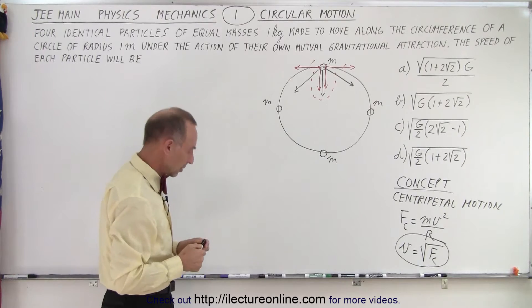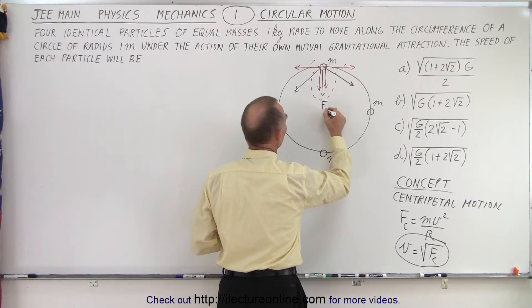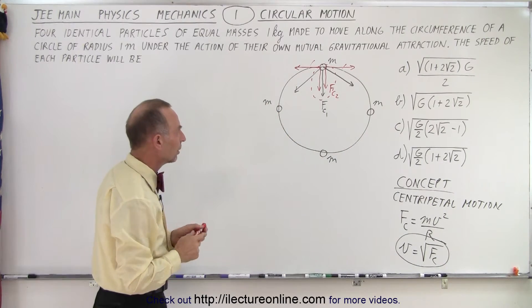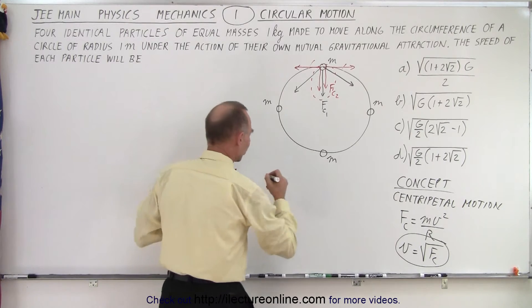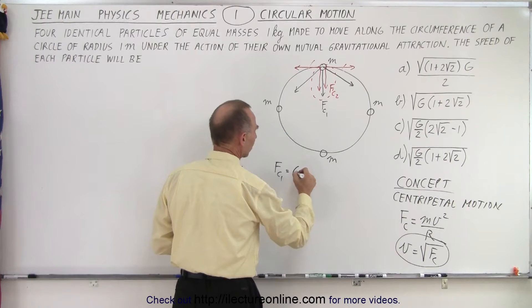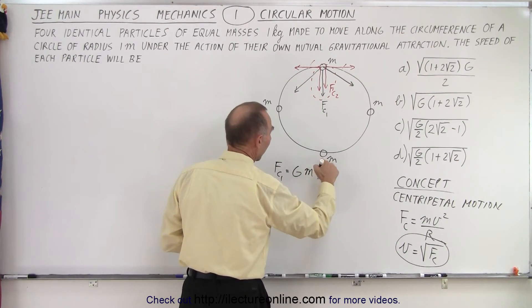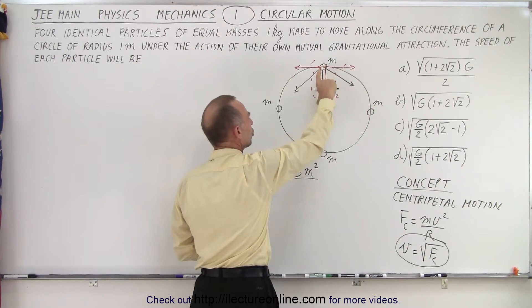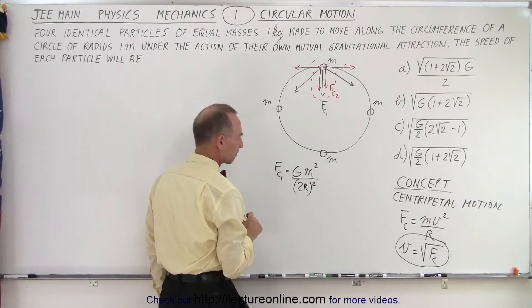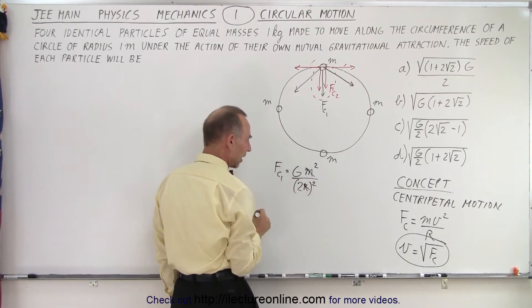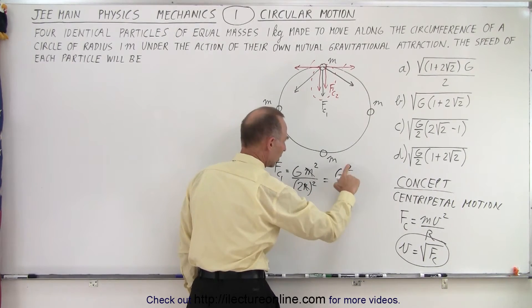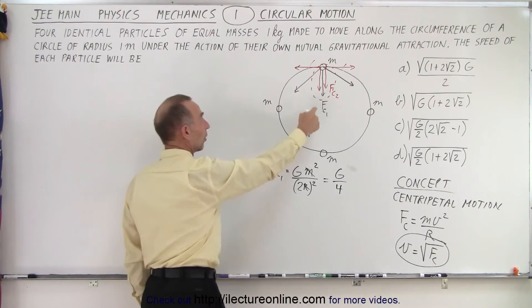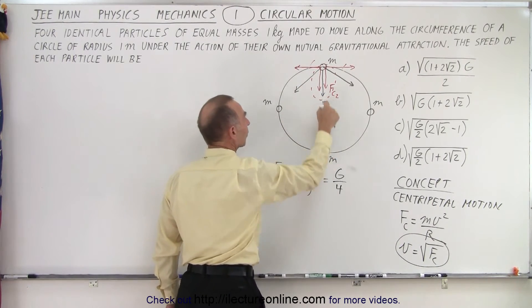Let's find the centripetal force. We'll call FC1 the force from the directly opposite particle, and FC2 the component from each adjacent particle. FC1 equals the gravitational force: G·m²/(2r)², which equals G·m²/4r². With m = 1 and r = 1, this simplifies to G/4. That is the centripetal force component contributed by the gravitational attraction between the two directly opposite particles.